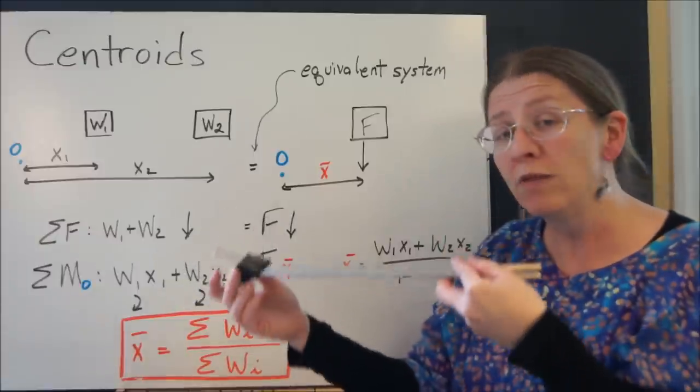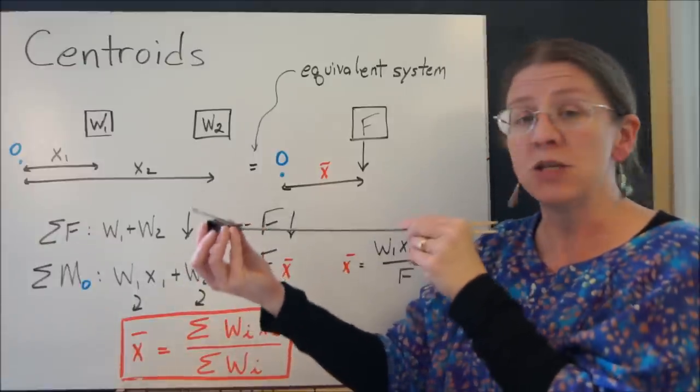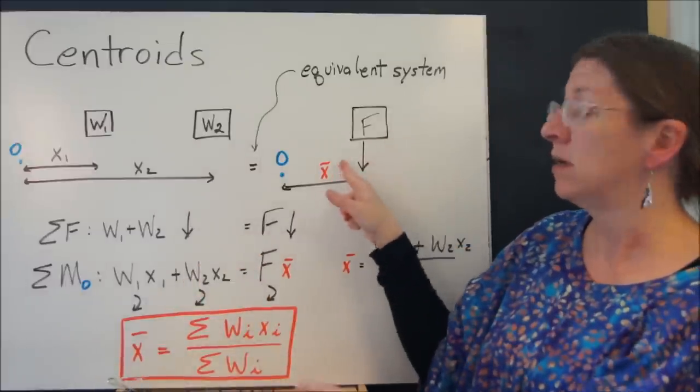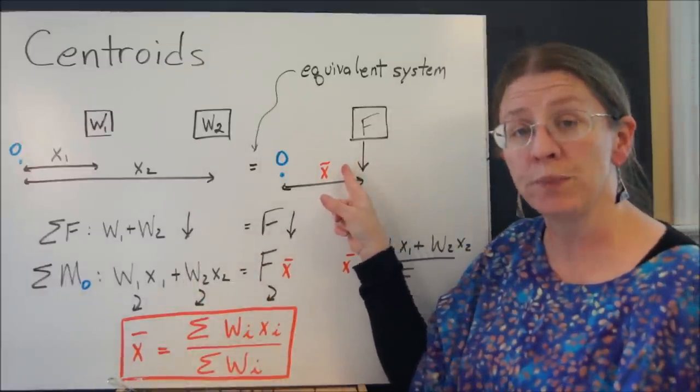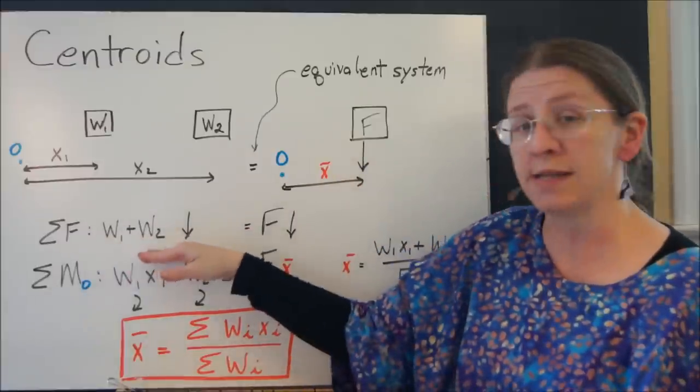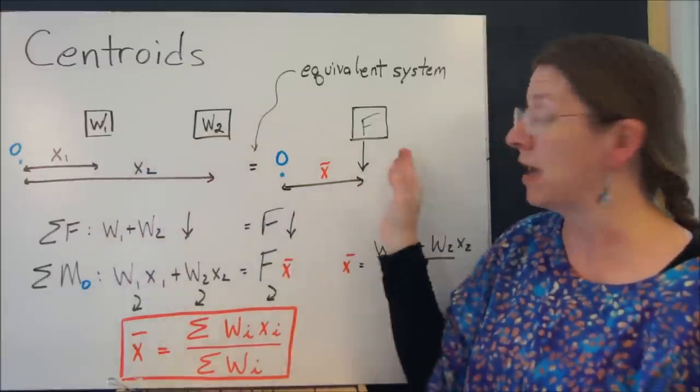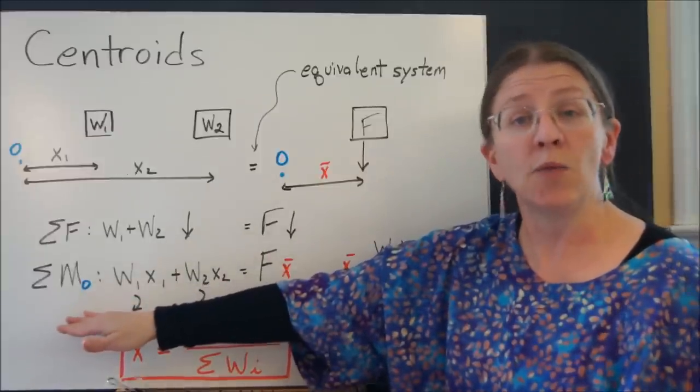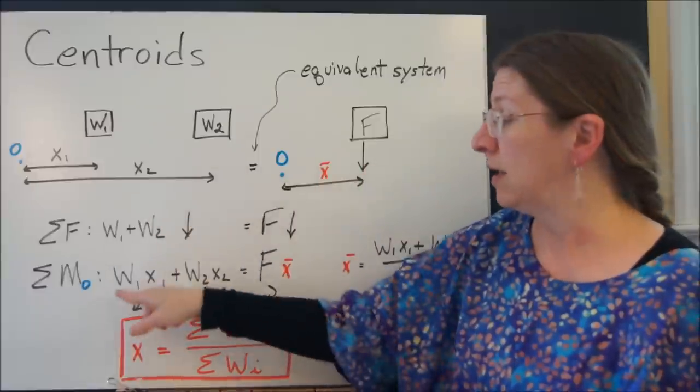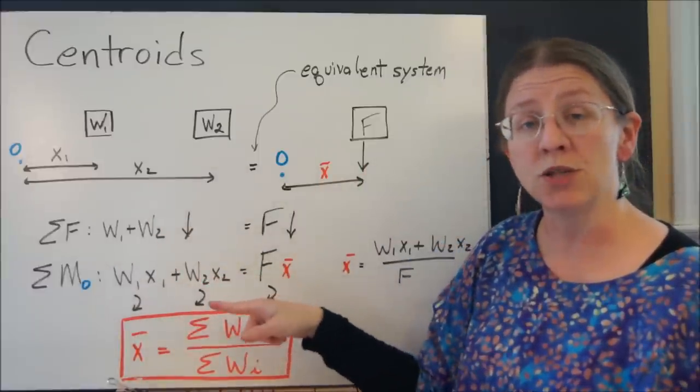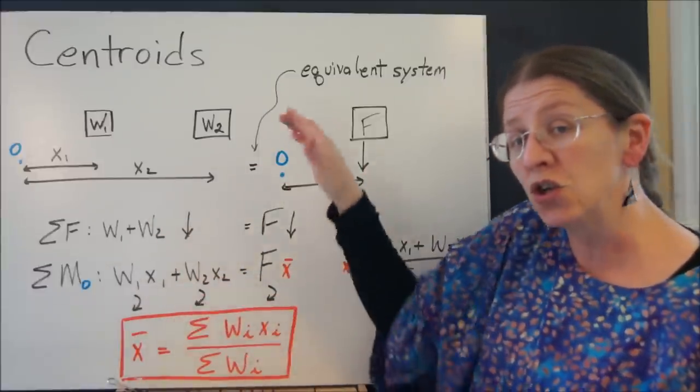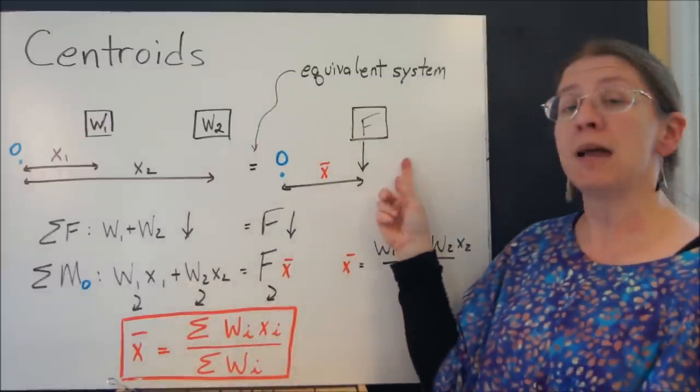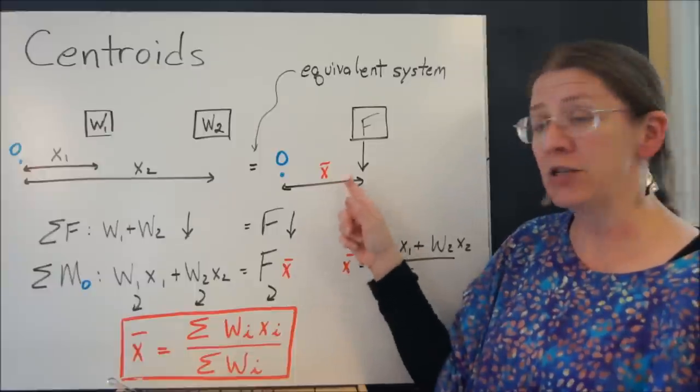I want to know where the equivalent weight from these two things acts. So where should I put the equivalent point force? Sum of the forces is the same. That means that w1 plus w2 has to be the same as F. The sum of the moments taken at some random point O gives me w1x1 plus w2x2. Now those are both tending to turn O clockwise. On this side I have F acting at my magic distance.